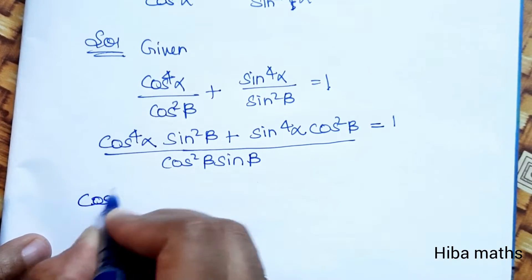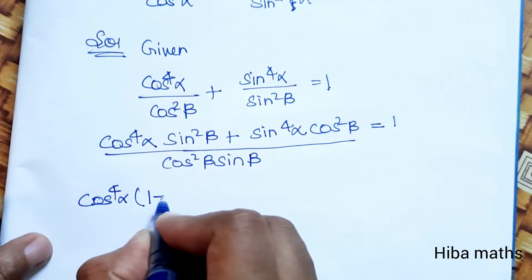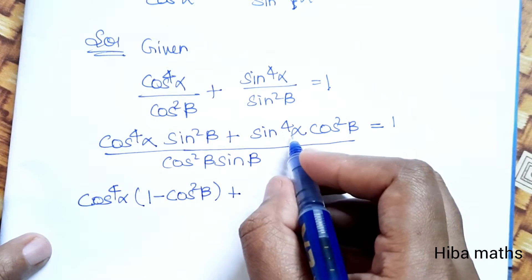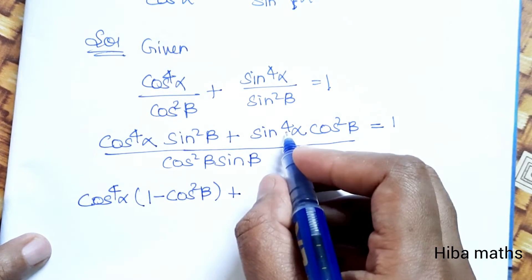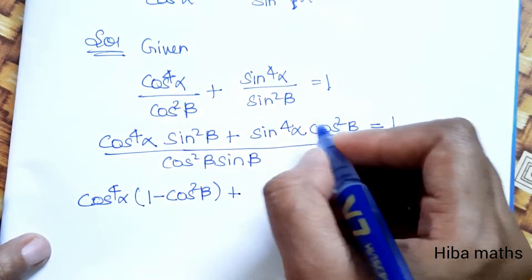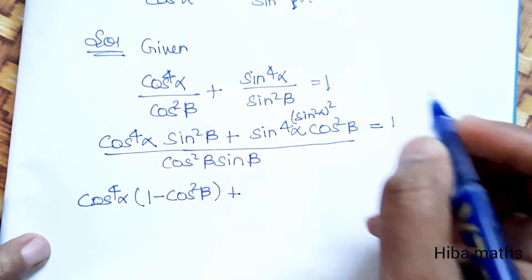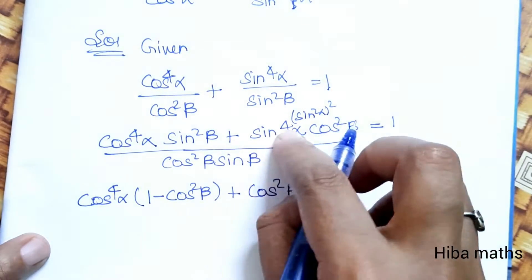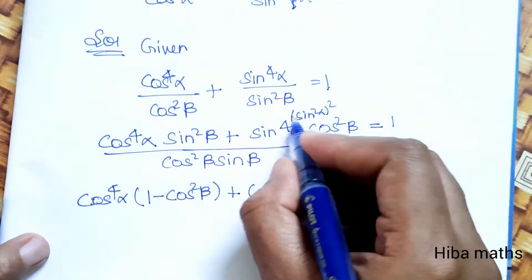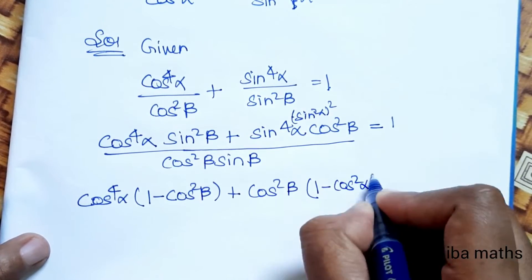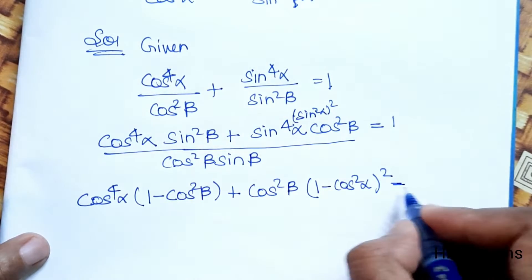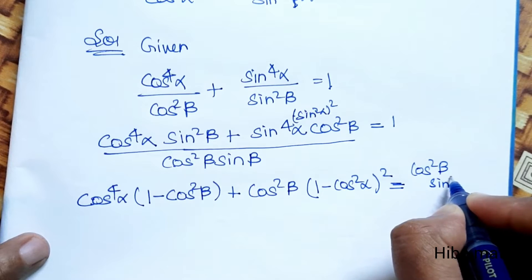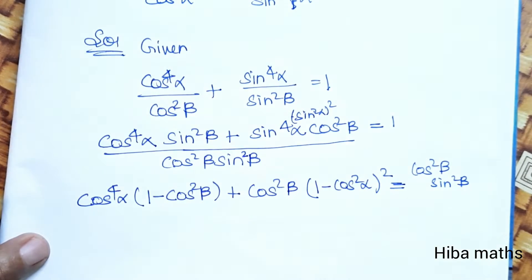Now, on the right side, we know sin²β = 1 − cos²β. Substituting: cos⁴α·(1 − cos²β) + sin⁴α·(sin²α whole square) = cos²β·sin²α·(1 − cos²α), which equals cos²β·sin²β.